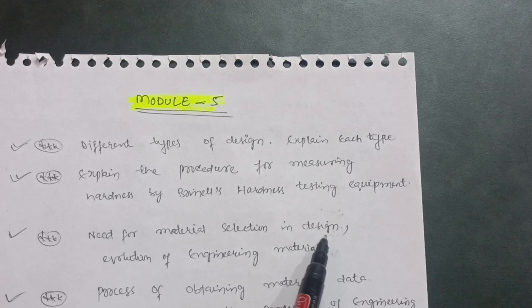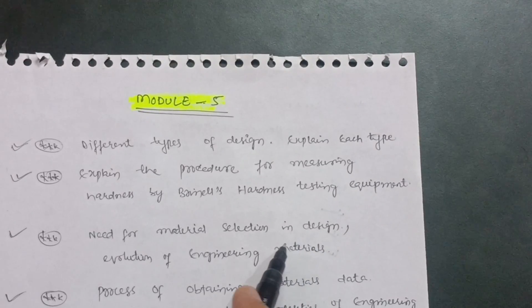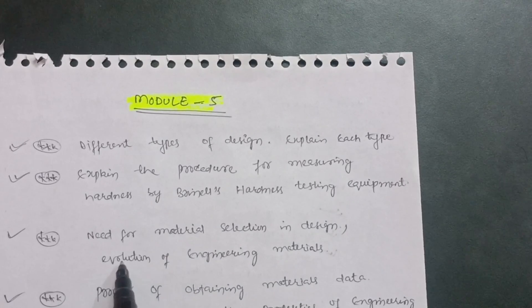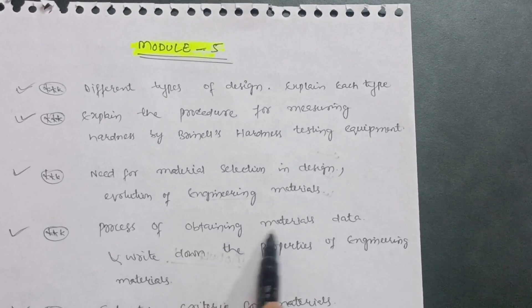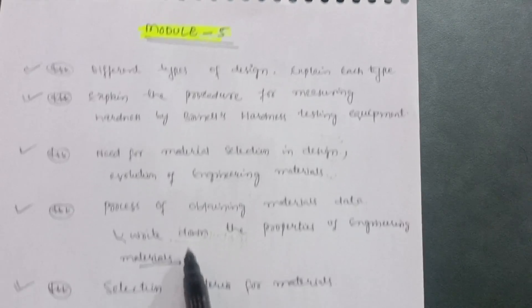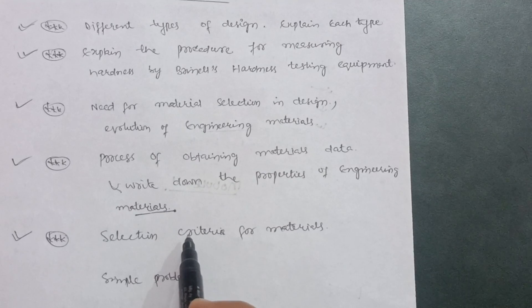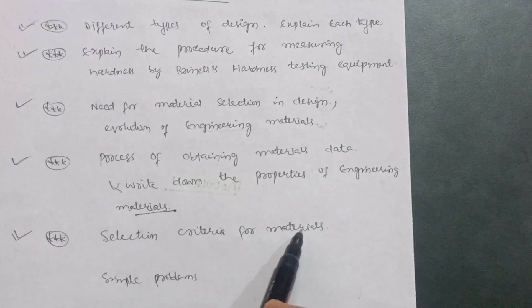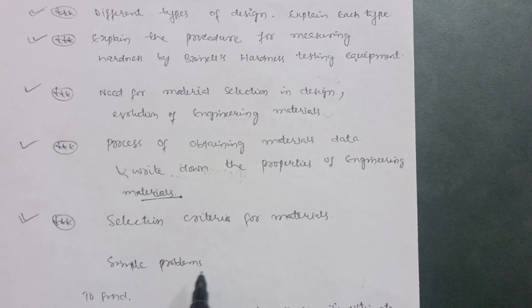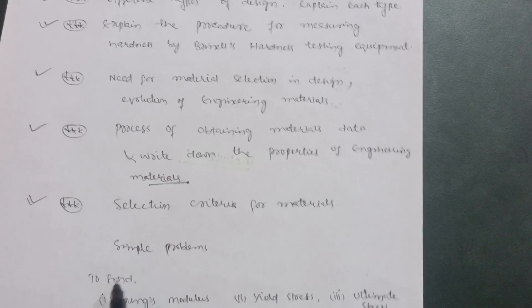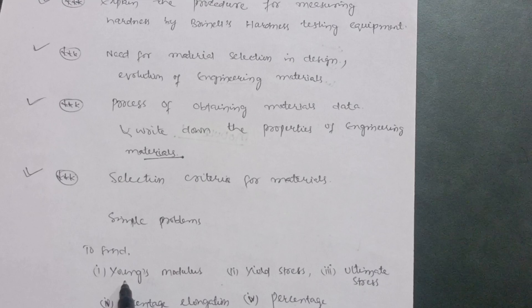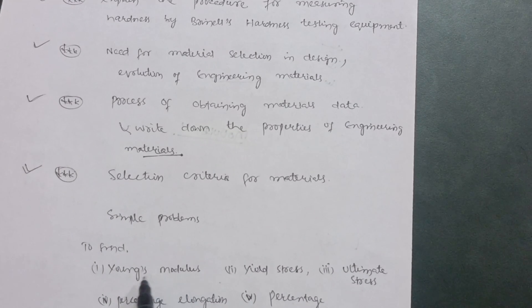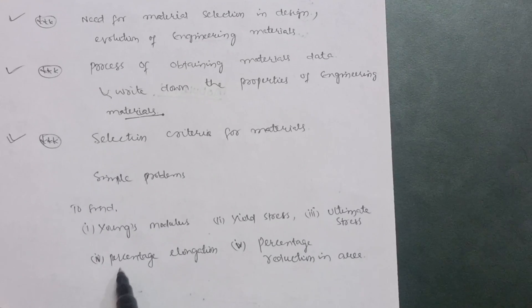Explain the procedure for measuring hardness by Brinell's hardness testing equipment — most important. The need for material selection in design is a theoretical topic; understand the concepts and write in your own words. Evaluation of engineering materials, the process of obtaining materials data, properties of engineering materials, and selection criteria for materials — these are all important. Also refer to previous year question papers for simple problems.